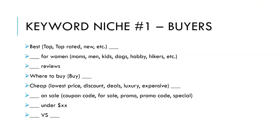So when I brainstorm keyword ideas, I like to break it down into two niches of common Google searches. The first being buyers. What words do buyers pair with keywords when they search within Google? This is a great way to extend a single keyword into a long tail keyword. So common keyword add-ons I use: best — then the keyword — so best laptop computer, top rated PC, new Samsung phone.